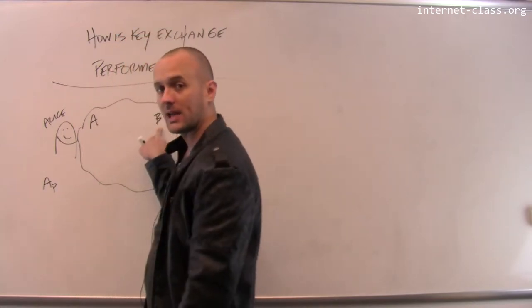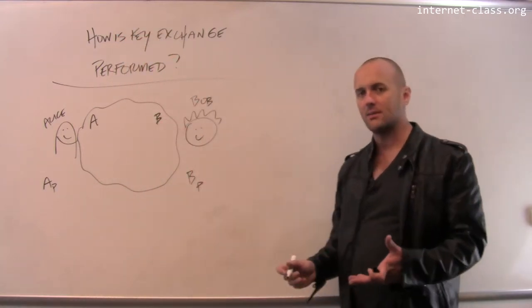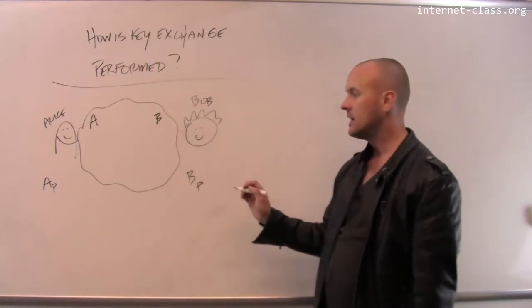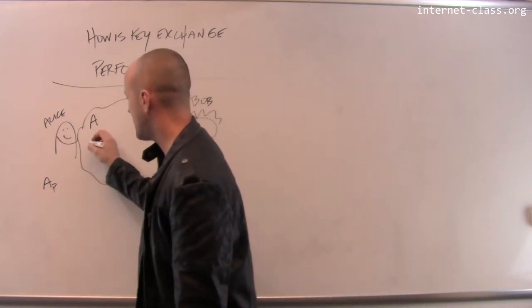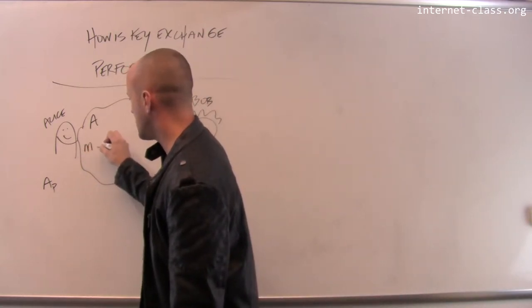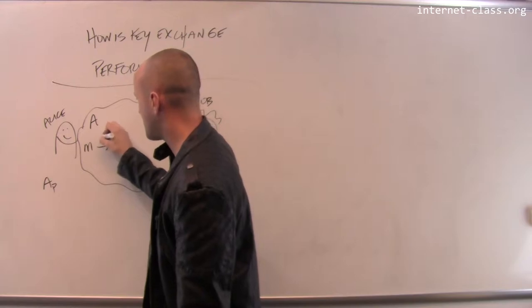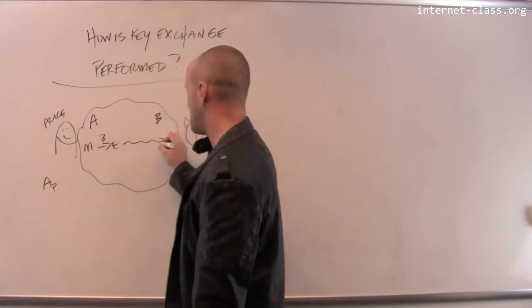She would look up Bob's public key, and she knows how to send a message to Bob using this public key. So she takes her message, she encrypts it using Bob's public key and sends this message to Bob.